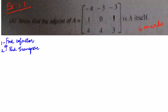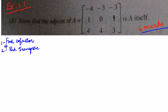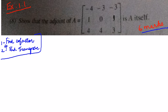This is Exercise 1.18, which is primarily a 6-marks question. You have to show that the adjoint of a 3×3 matrix A is A itself. There are two steps to find the adjoint: first you have to find the cofactor, and then we have to do the transpose. Earlier we did the adjoint of 2×2 matrices; now we are going to do it for a 3×3 matrix.